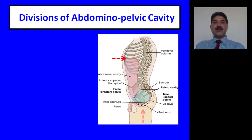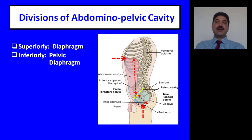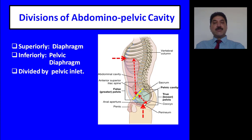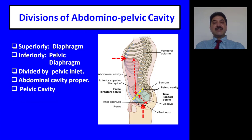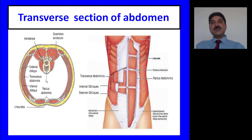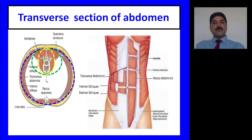Division of abdominal pelvic cavity: superiorly it is bounded by the thoracoabdominal diaphragm and inferiorly by the pelvic diaphragm. It is divided by the inlet of the pelvis into the abdominal cavity, which lies above the pelvic inlet, and the pelvic cavity, which lies below the inlet of the pelvis. The posterior abdominal wall includes the bodies of the five lumbar vertebrae in the region of the abdomen and sacrum and coccyx in the pelvic region. The anterior lateral abdominal wall is composed of muscles.